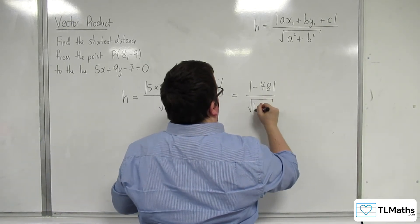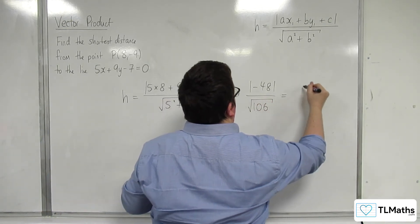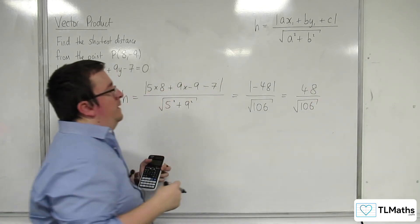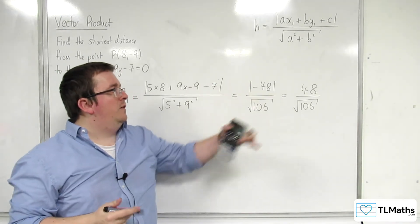So this is 48 over root 106, taking the length of the negative.